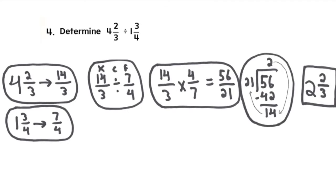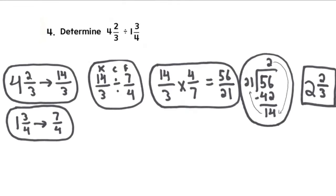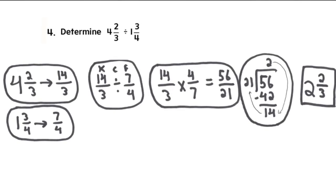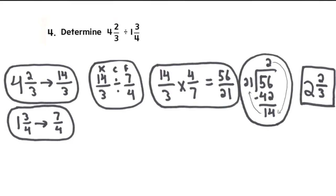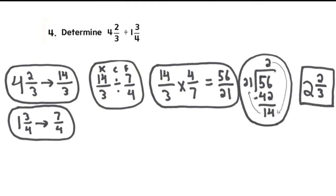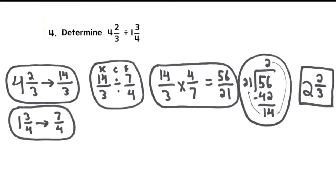If you multiply the numerators, you end up with 56. If you multiply the denominators, you end up with 21. Since it's improper, you would have to divide once and go clockwise.